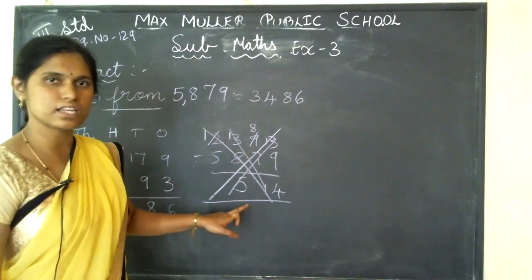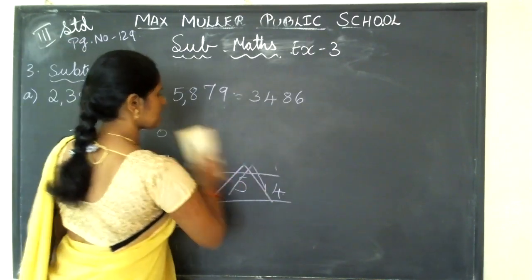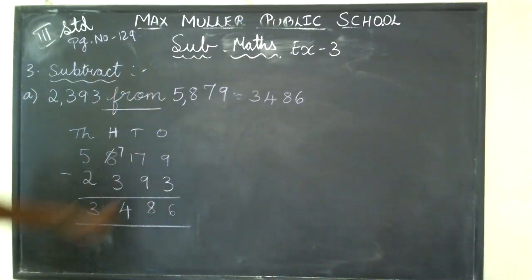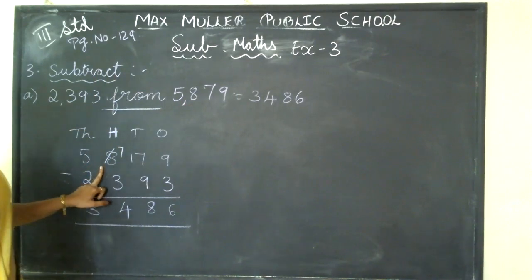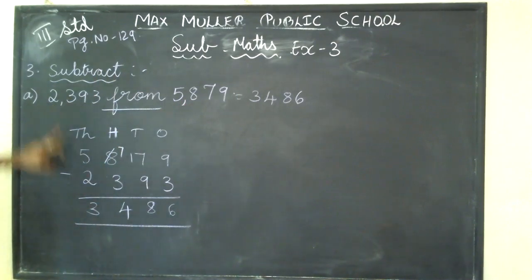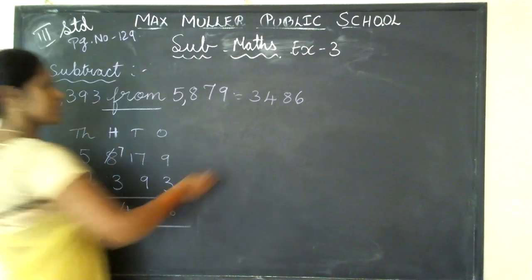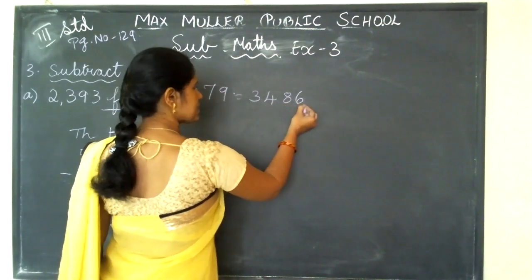Can I subtract easily? No. So for that reason, what we are going to do — we are writing 5,879 first, then we are writing 2,393. Then we are subtracting, and we will get the answer: 3,486.